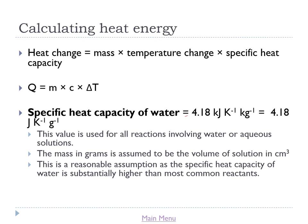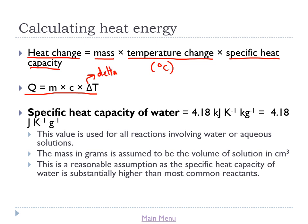We can calculate heat energy by taking into account both the temperature change of a material and the mass of that material, getting us closer to the actual total amount of heat energy. We're going to use this equation: the heat change of a substance equals its mass multiplied by the change in temperature (in degrees Celsius) multiplied by the specific heat capacity of that material. We can express that in symbols as q = m × c × ΔT. That triangle, delta, is used to refer to a change, so ΔT means the change in temperature.